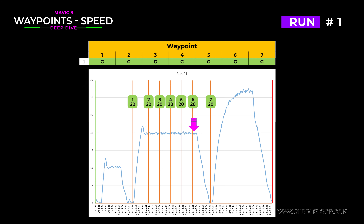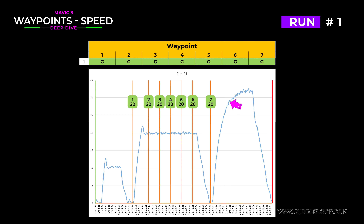It stayed at 20 miles per hour crossing the sixth waypoint. Then, as you can see, it totally ignored our last speed setting, gradually slowing to a complete stop at the last waypoint. Once the mission is complete, it executes the end-of-flight setting set to return to the first waypoint, which it does at the drone's top speed of around 30 miles per hour.